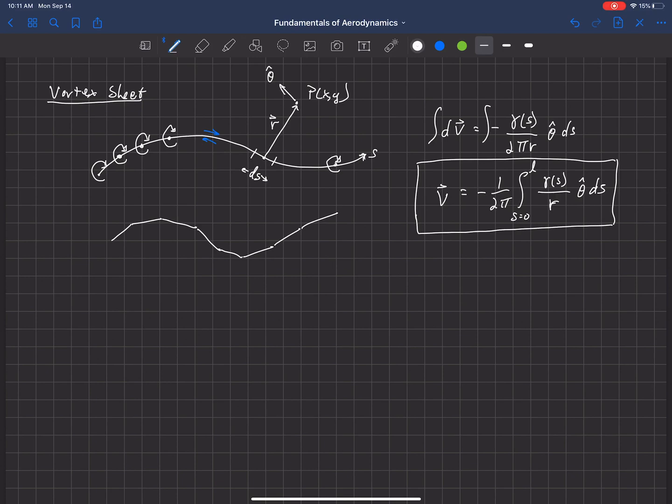In general we would need to integrate this equation numerically in order to find the velocity at some point induced by this vortex sheet here. But if we use panels, these discrete panels, the mathematics simplifies significantly and then we can increase the number of panels to increase the grid resolution.